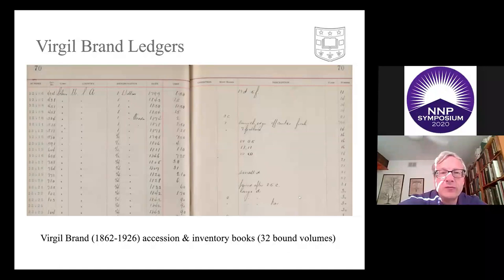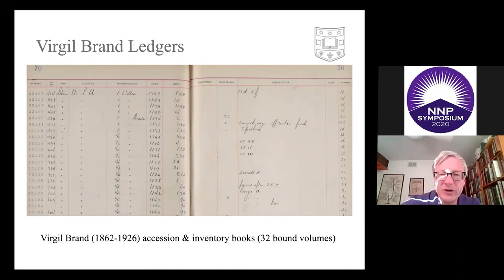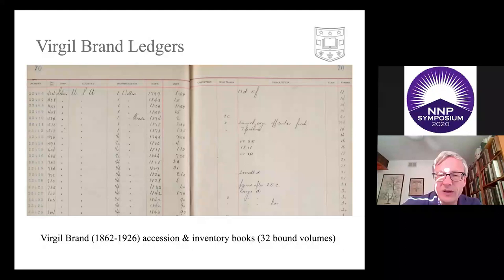This is what the Virgil Brand ledgers actually look like — just a sample page, 32 bound volumes. The scan here may not convey the physical size of the volumes; they're very impressive in person. But now with online access, you don't have to handle those books unless you'd like to. Just from a historical perspective, they're quite interesting artifacts, but in terms of the content itself, you can get at that from the comfort of your own home.